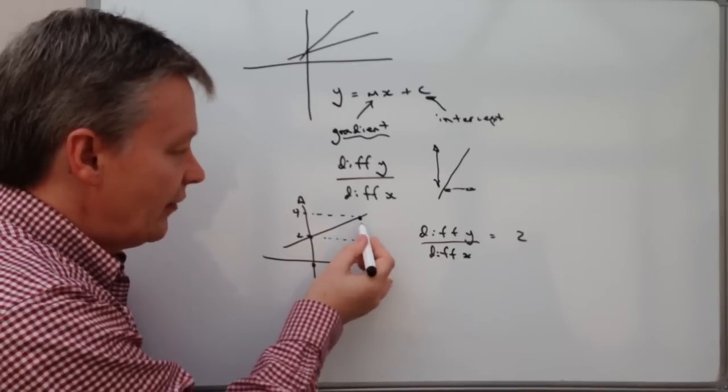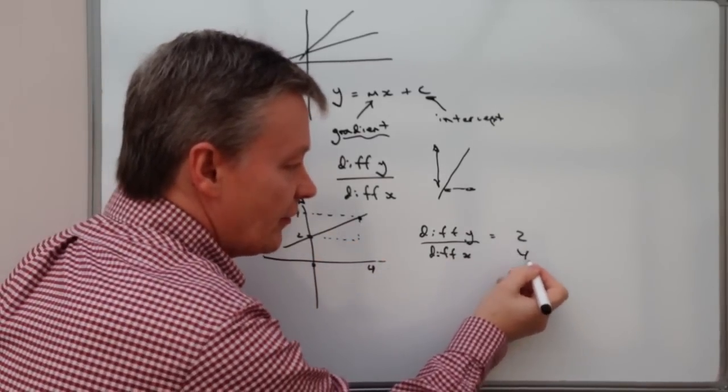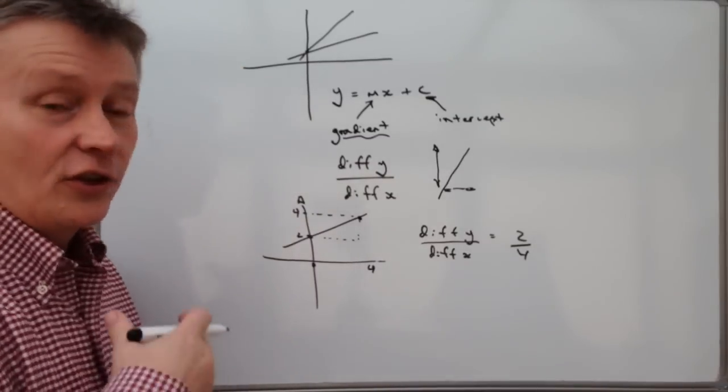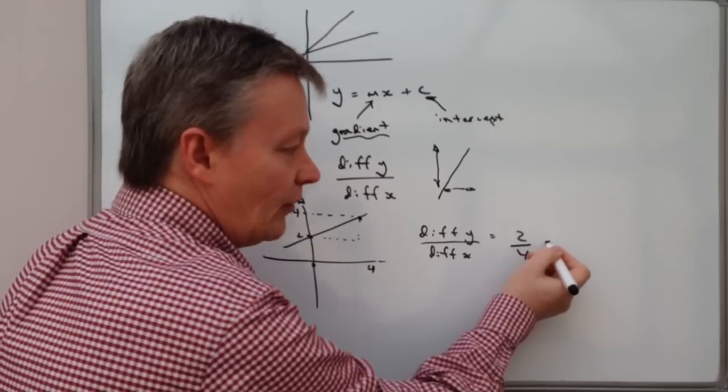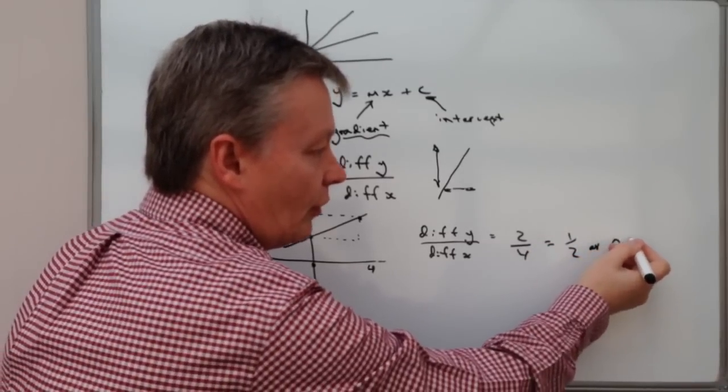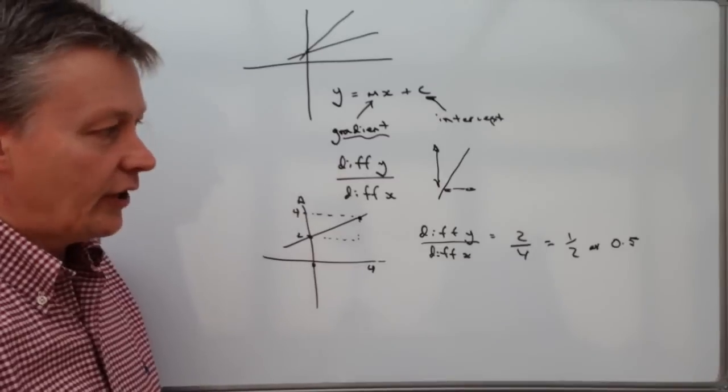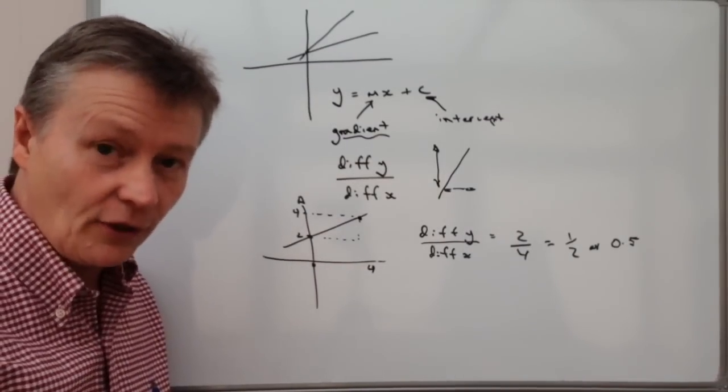So it's this distance along here, the difference, zero to four, so that's four. So in other words, the gradient of this line is two divided by four, which is a half or 0.5. And that's how we would describe that particular gradient on this particular graph.